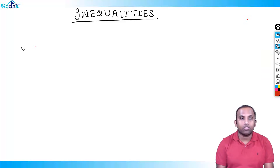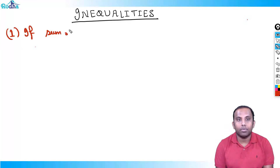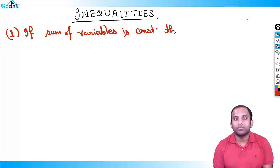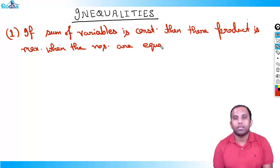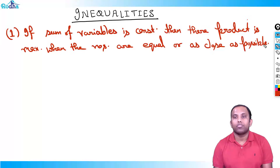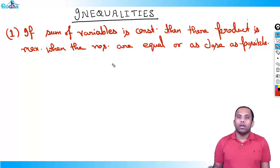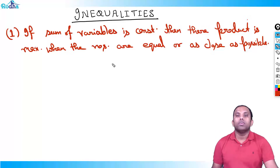There are many fundas in inequality. We will discuss all those fundas here. First one: if sum of variables is constant, then their product is maximum when the numbers are equal or as close as possible. This is a very good observation. All these fundas are basically derived from arithmetic mean greater than or equal to geometric mean and harmonic mean. We will discuss that part after all the rules. This is your first funda.